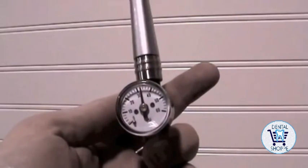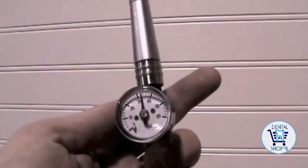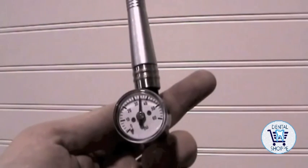As you can see, the gauge on the hose reads about 32 PSI, so we were able to determine no adjustment was needed on the block at this time.